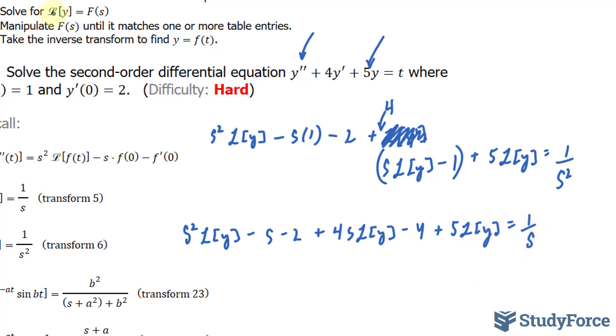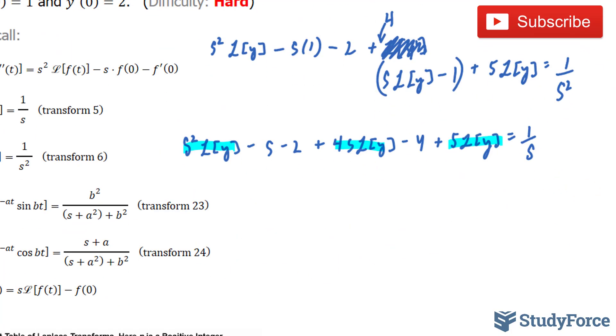According to step number 2, they say solve for the Laplace transform of y. That being said, I need to group together this term, this term, and this term, and take all the other terms to the other side. The reason for that is I can then factor out the Laplace transform of y. In fact, I'll do that right now. Laplace transform of y, bracket, s^2, plus 4s, plus 5.